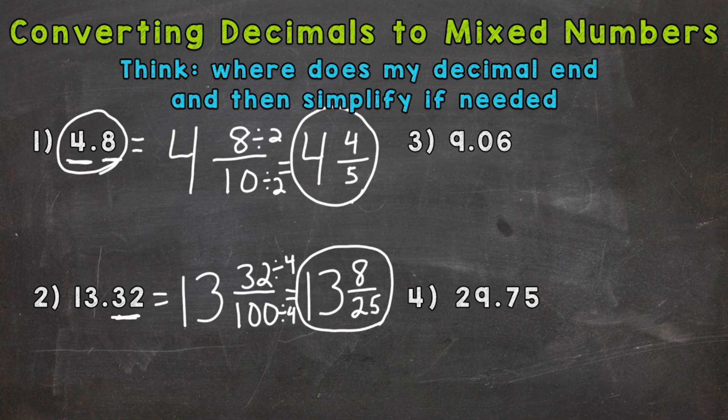Number three we have nine and six hundredths. So nine is our whole number keep as is. Let's see how far over our decimal goes. Well it goes to the tenths hundredths place. Tenths and then hundredths. So it ends in the hundredths. That's our denominator. And what number's to the right of the decimal? It's a six. So we have nine and six hundredths.